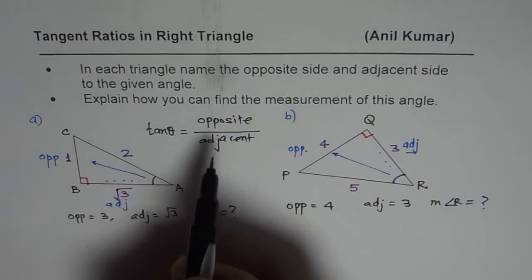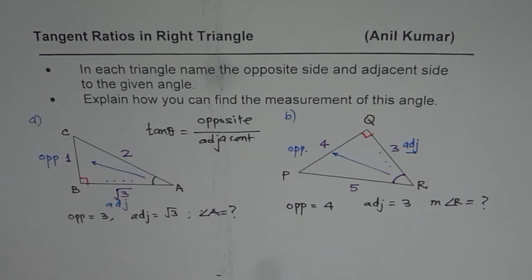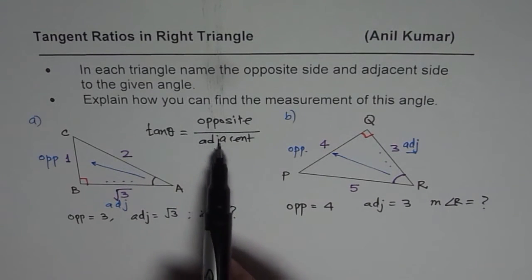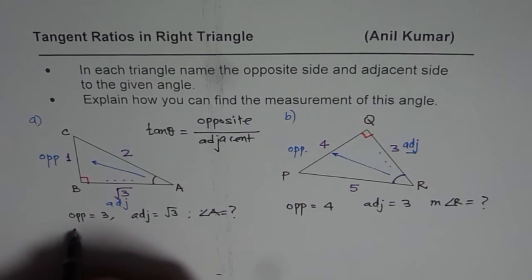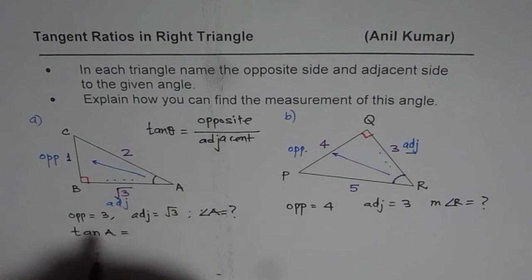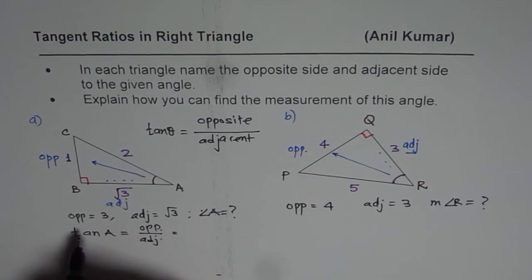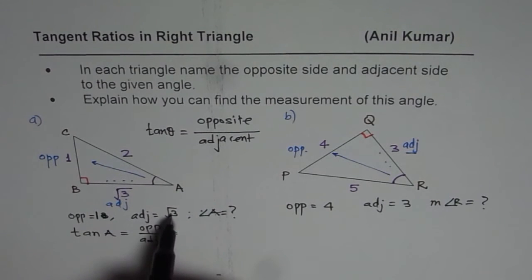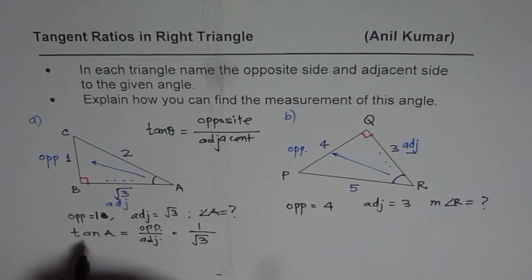To find the angle, we find the inverse of this. We will use the calculator to find the inverse and get the answer. Tan theta, or the tan ratio for the given angle, is opposite over adjacent — it is the ratio of these two sides. So let us find tan A. Tan A is equal to opposite side over adjacent: opposite side is 1, adjacent is square root of 3. So tan A equals 1 over square root of 3.